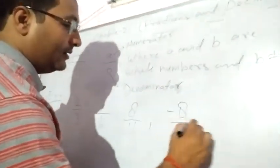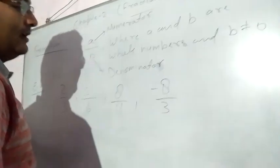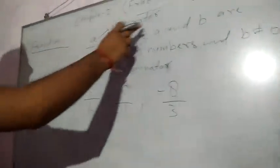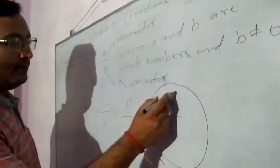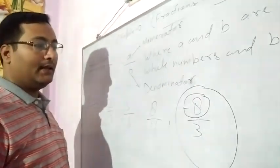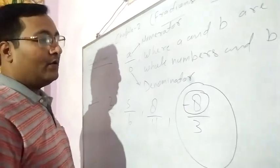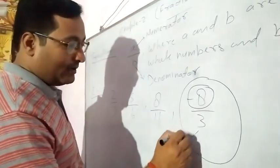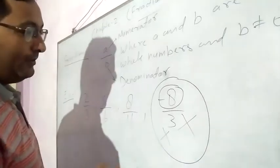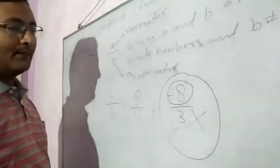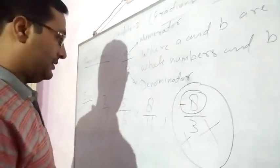Now if we write minus 8 by 3, is this a fraction? I told you A and B should be whole numbers. So minus 8 — is it a whole number? No, it is an integer. So we can say minus 8 by 3 is not a fraction, because minus 8 is not a whole number — it is an integer.